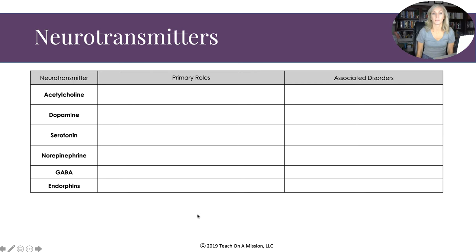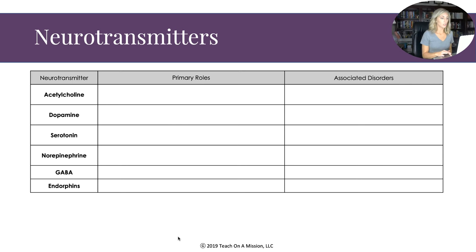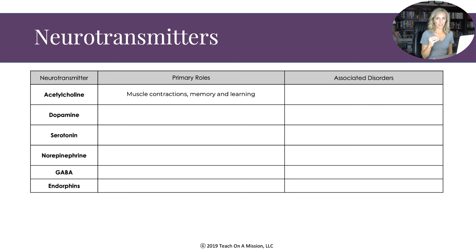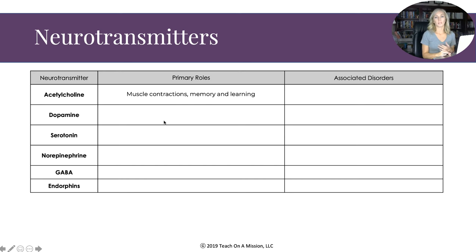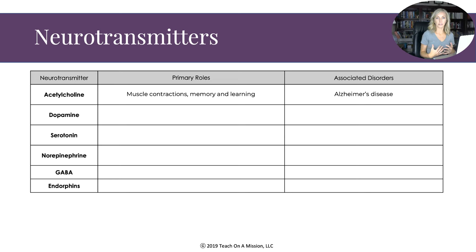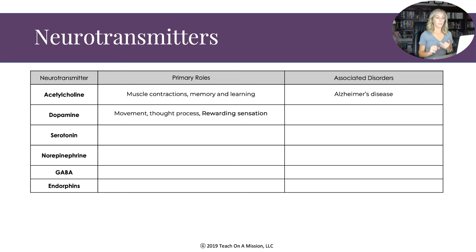There are different types of neurotransmitters. Acetylcholine's primary role is muscle contraction — allowing you to squint your face or flex your muscles. It's also involved in memory and learning. Too little acetylcholine is associated with Alzheimer's disease.